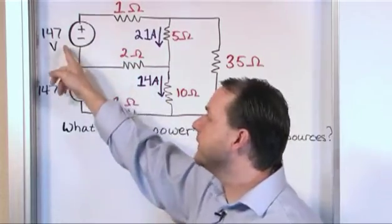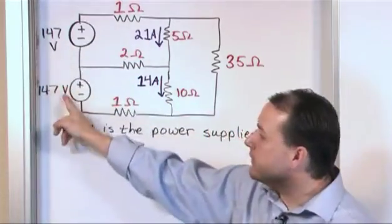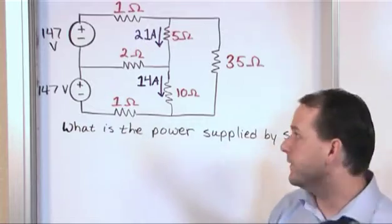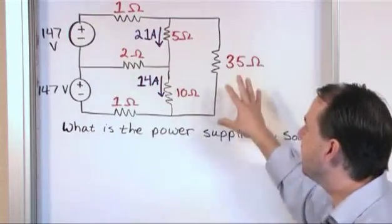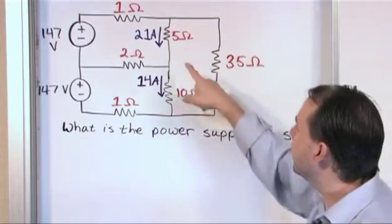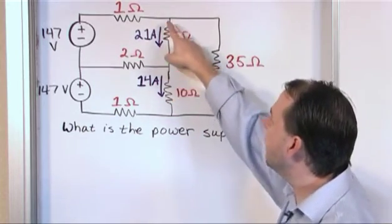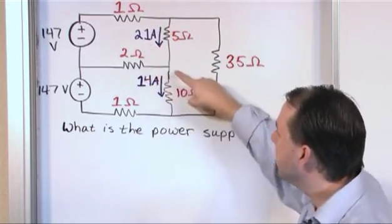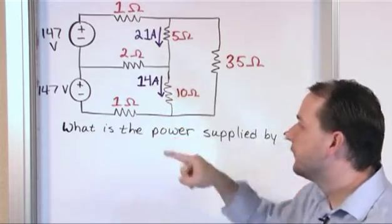So in this case we have a source that's 147 volts. We have another source that's also 147 volts. And then we have this resistor network which is labeled. And then we're also given that the current in this branch right here is 21 amps. And the current in this branch is 14 amps.